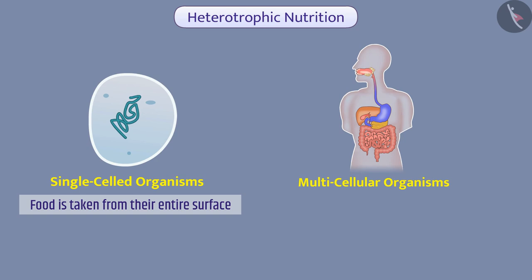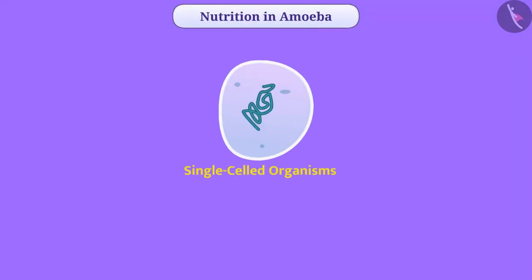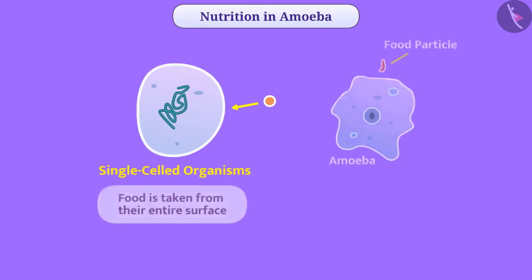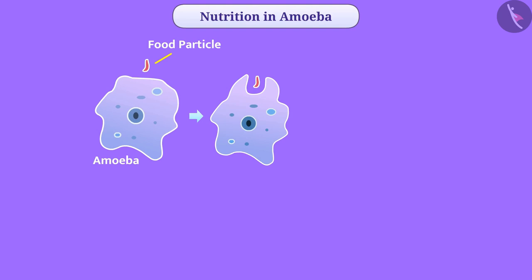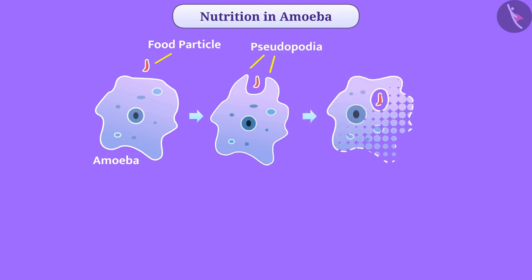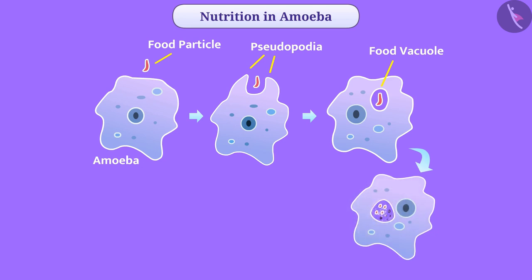Let us understand amoeba's method of consuming food. As in single-celled organisms, food is taken from their entire surface. Amoeba surrounds food particles with temporary finger-like extensions of their cell surface called pseudopodia. All extensions then fuse and form the food vacuole. Inside, this complex food is broken down into simpler substances. The remaining undigested material moves towards the cell surface and is removed from the body.